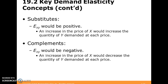Consider hot dogs and hamburgers. If the price of hot dogs increases, the demand for hamburgers increases — you'd say, the price just went up, I'll take hamburgers instead. For complements — two goods that go together — the opposite holds: an increase in the price of X would decrease the quantity of Y demanded at each price. For example, if an increase in the price of hot dogs decreases the quantity of hot dog buns demanded, that makes sense — cross price elasticity would be negative.